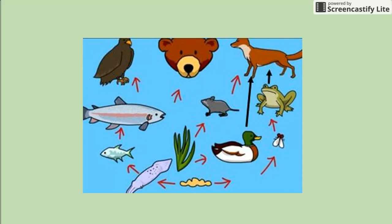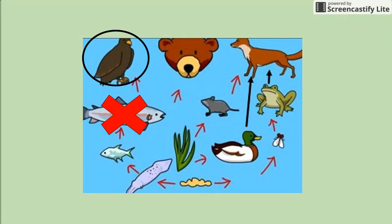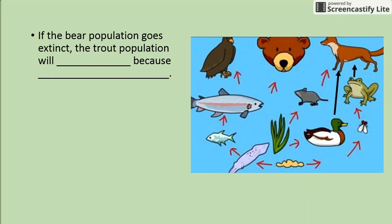The bears are not the only ones affected by the trout going extinct. Write in your notes for number seven how the hawk would be affected and how the smaller fish would be affected. Now, if the bear population goes extinct, the trout population will increase because the bears will no longer consume them.